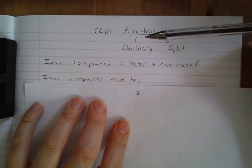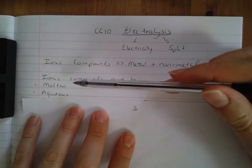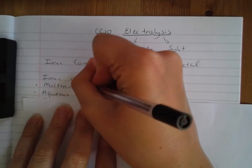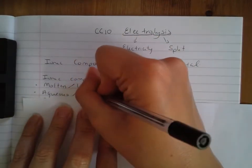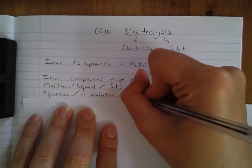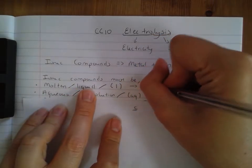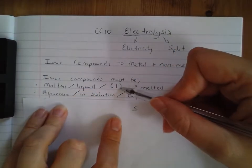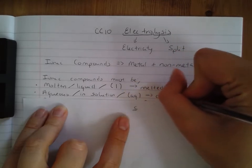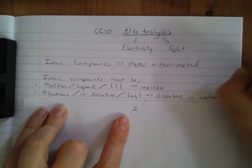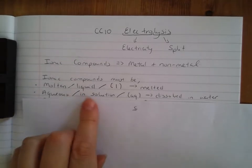In order to do this experiment, your ionic compound must be able to conduct electricity. For an ionic compound to conduct electricity, it must be either molten or aqueous. Another word for molten is liquid, and you can use the state symbol (l). Another word for aqueous is 'in solution', and you can use the state symbol (aq). If something is molten or liquid, it means you have melted it — taken a solid and melted it. If something is aqueous or in solution, you have dissolved it in water.